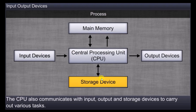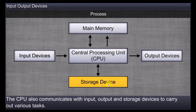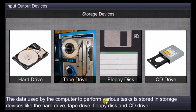Both input and output devices communicate through the CPU. The data from the input devices and information for the output devices are also stored in a storage device — the main memory. Main memory is divided into primary memory inside the CPU, which includes RAM and ROM — random access memory and read only memory — and secondary storage, where data can be stored on a permanent basis. The CPU also communicates with input, output, and storage devices to carry out various tasks.